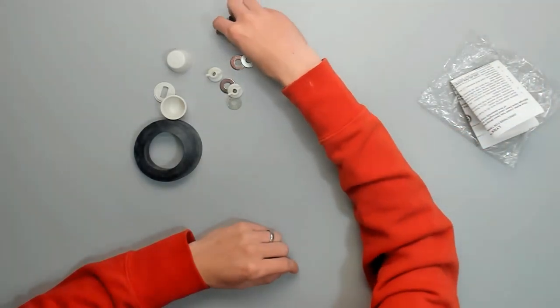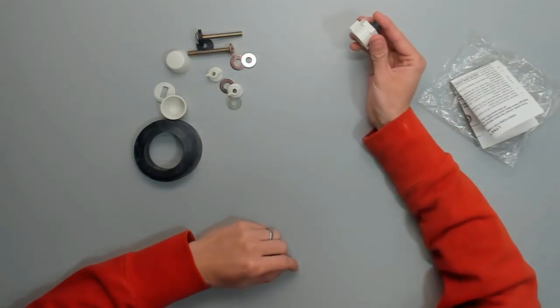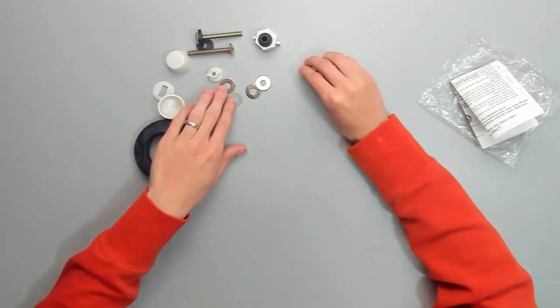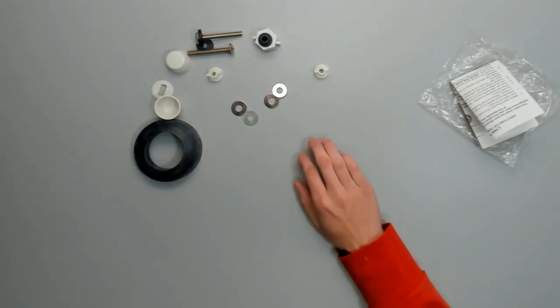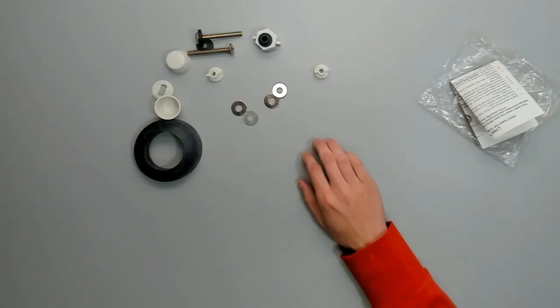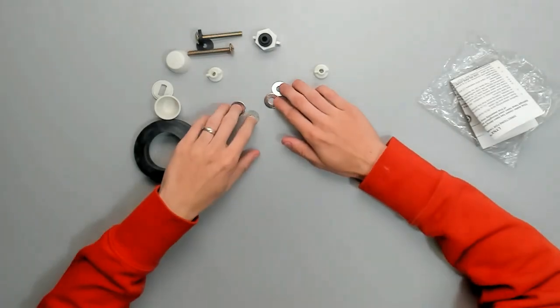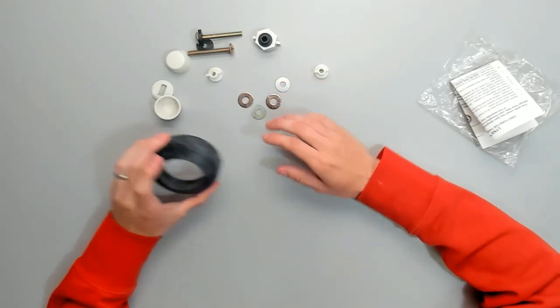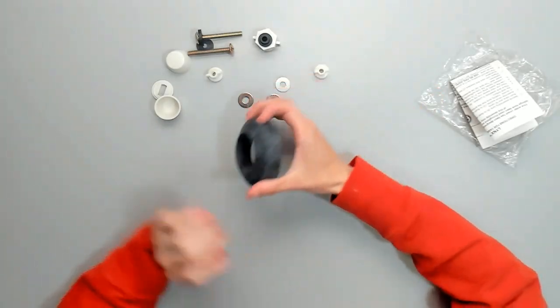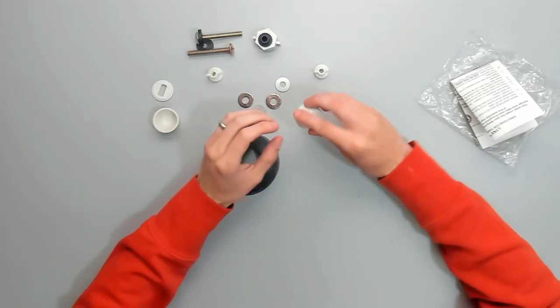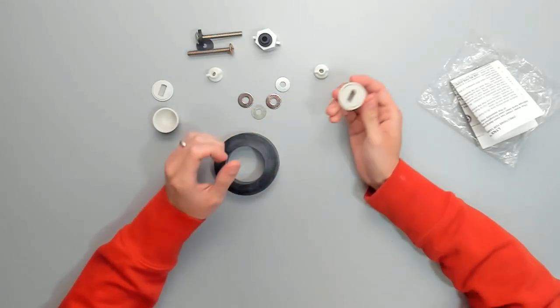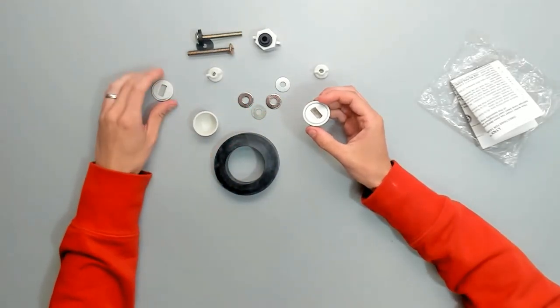So you've got two bolts, two washers, supply line nut and washer. These four washers here, the gasket, the bolt caps, and the bases.